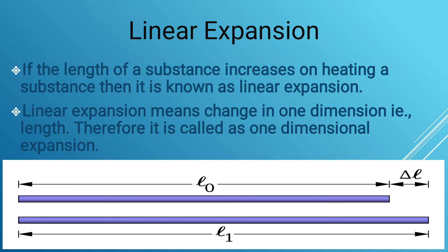Let us take an example with respect to the size of a rod. Let the length of the rod before heating be equal to 5 meters, and after heating it becomes 5.5 meters. So the delta L, the change in length, will be equal to 5.5 meters minus 5 meters, which equals 0.5 meters. This 0.5 meters is the delta L, the change in length.